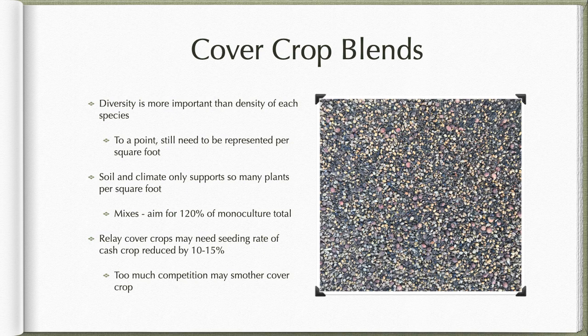When dealing with relay cover crops — where we grow two or more crops together with the intent of harvesting one, but allowing the relay cover crops to continue growing after harvest until freeze-up or overwintering — when seeding something like oats that is really competitive with Italian ryegrass and subterranean clover growing underneath, we may have to reduce our seeding rates on those oats by 10 to 15% to allow enough light penetration through the canopy. Otherwise there may be too much competition, which will smother that relay cover crop underneath.